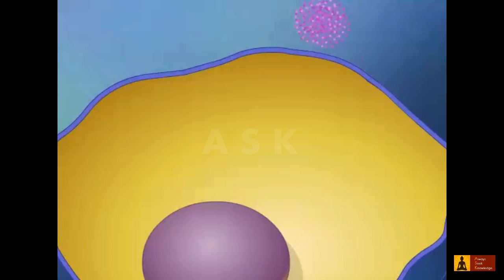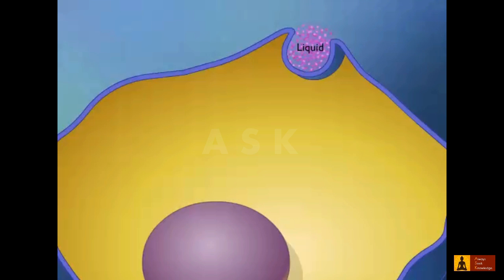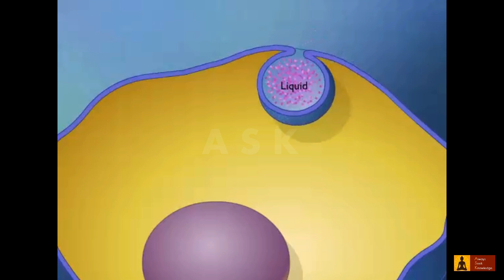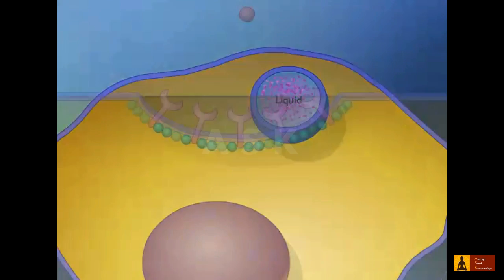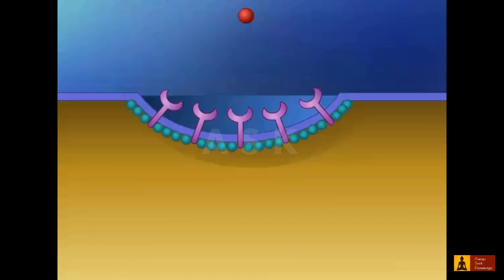If the material the cell takes in is liquid, it is called pinocytosis. Specific molecules, such as low-density lipoproteins (LDL), are often transported into eukaryotic cells through receptor-mediated endocytosis.